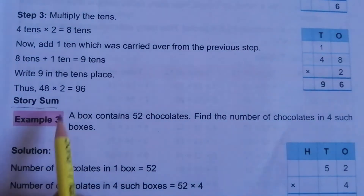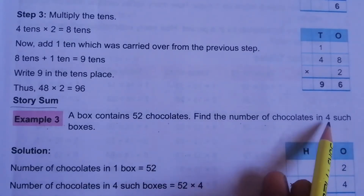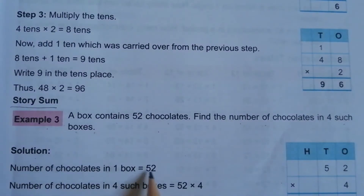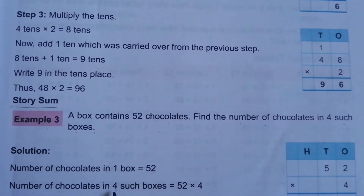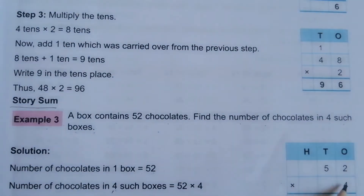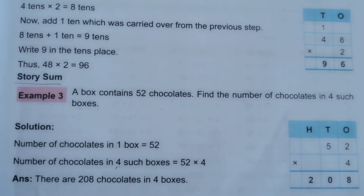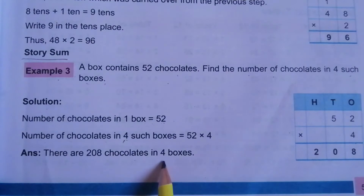Example 3 — story sum: A box contains 52 chocolates. Find the number of chocolates in 4 such boxes. Solution: number of chocolates in one box = 52. Number of chocolates in 4 boxes = 52 × 4. Write the numbers vertically: 4 twos are 8, and 5 fours are 20. So the answer is 208. There are 208 chocolates in 4 boxes.